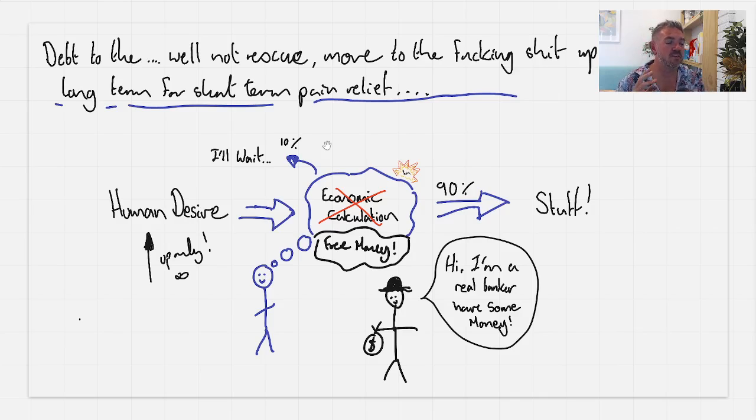We're going to look at an unsound money world, which is the world we live in right now, where everything is really based on debt. Is debt going to come to the rescue? No, it's going to come to the not quite rescue, more to the fucking shit up in the long term for short-term pain relief. The way it works in the debt-based world is instead of just having the economic calculation to make and this pain that he has to wrestle with to say is it worth it, this guy, this guy's a real banker, and he's going to come along and he's going to offer Phil some money.